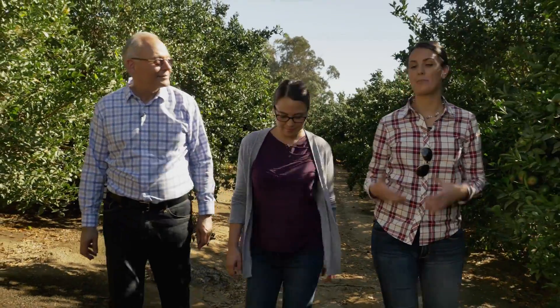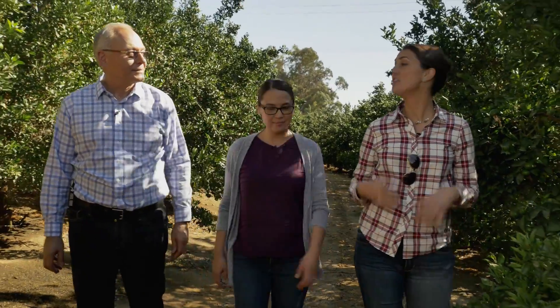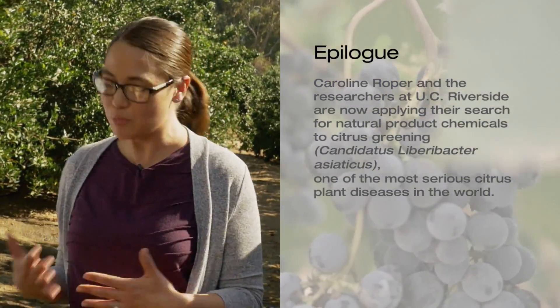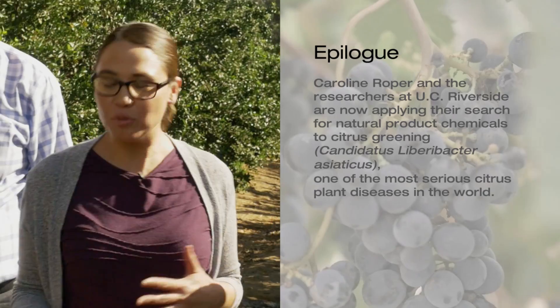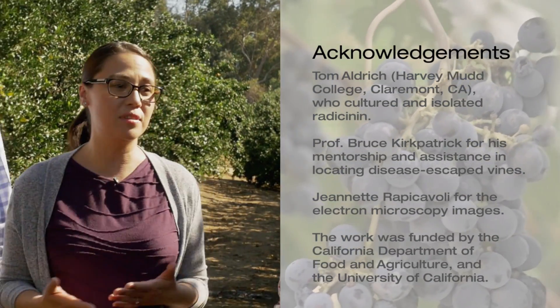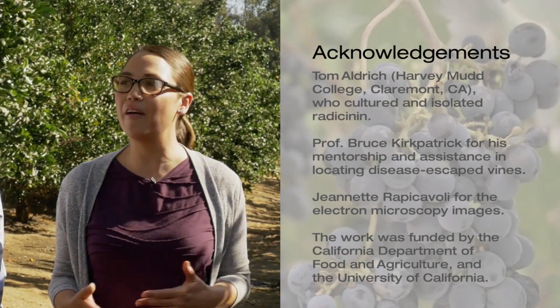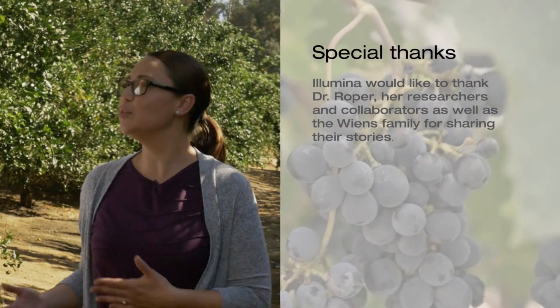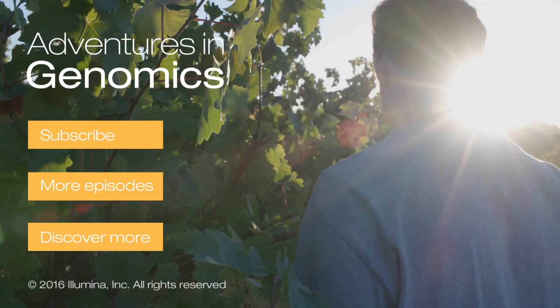The idea that plants, bacteria, and fungi are natural chemists means the same natural approach can potentially be applied to other crops like citrus. In fact, that's where the agricultural research community is moving — towards understanding plants and all their associated organisms like microbes, and how that network operates at a systems level to affect plant health and crop productivity.